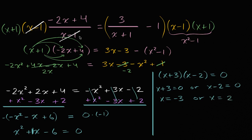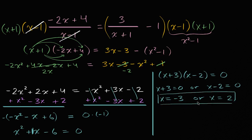We want to make sure the original equation isn't undefined for either solution. Negative three does not make either of the denominators equal to zero, so that's good. Positive two does not make either of the denominators equal to zero either. So there are two valid solutions. If one of them had made a denominator zero, it would have been an extraneous solution — valid for intermediate steps but not for the original equation as written.